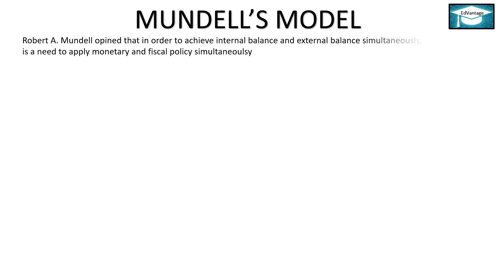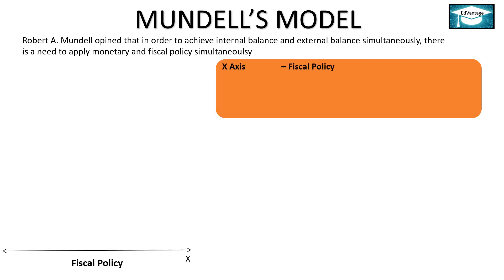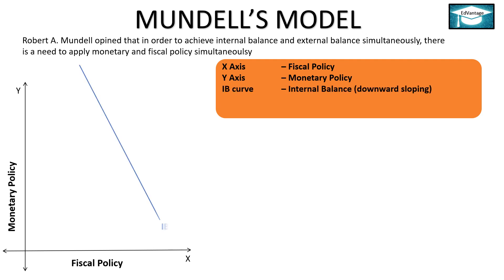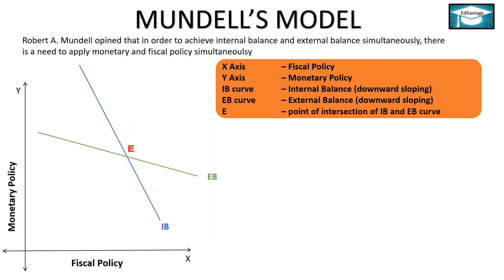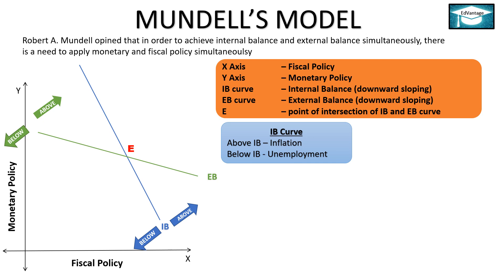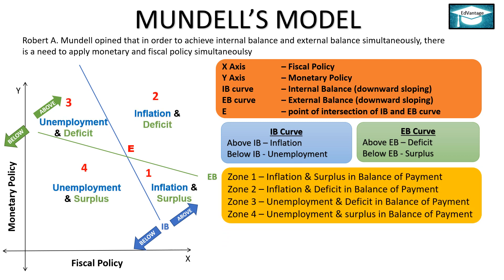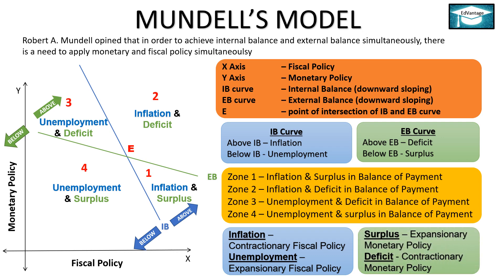Mundell's Model: Robert A. Mundell opined that to achieve internal and external balance simultaneously, there is a need to apply monetary and fiscal policy simultaneously. On the x-axis we have fiscal policy; on the y-axis we have monetary policy. The IB curve shows internal balance and is downward sloping. The EB curve shows external balance and is also downward sloping. E is the point of intersection. Above the IB curve we have inflation; below we have unemployment. Above the EB curve we have deficit; below we have surplus. The graph is divided into four zones. For inflation and unemployment we use fiscal policy; for surplus and deficit we use monetary policy.